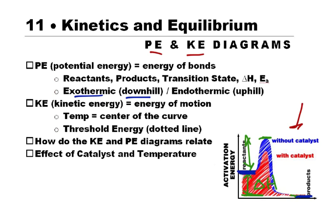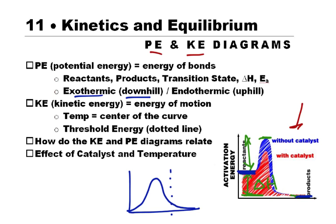Now the kinetic energy diagram is a different diagram altogether, and that's the one that shows how much energy the particles happen to have and how much energy of motion they have. And that's the one that has the threshold energy in it. We want to know how these two diagrams relate to each other, and how they change when you put in a catalyst or change the temperature.